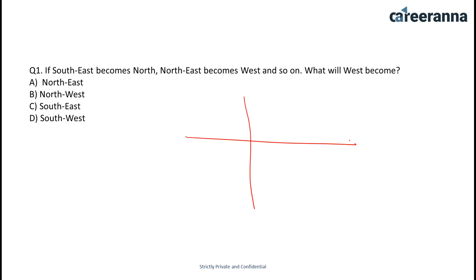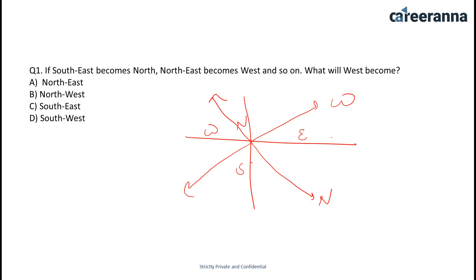Generally the directions are: southeast, south, east, north, and west. So southeast becomes north and northeast becomes west. This direction becomes east and this is south. We have to find west — west becomes southeast, so option C is your answer.